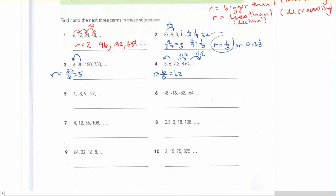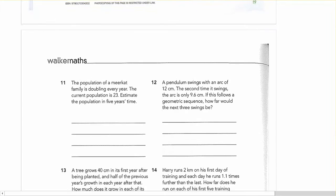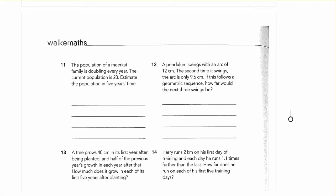So that's how you find r with your geometric sequences. And sometimes you've got to think about it in word problems as well. So read the questions carefully and look for things like doubling. Well that's going to be multiplying by 2.